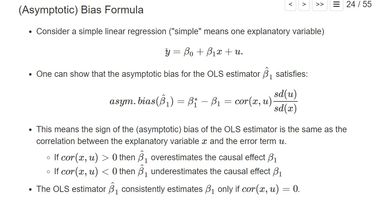There's a formula for the asymptotic bias in a simple linear regression — simple meaning we have only one explanatory variable. One can show that the asymptotic bias of the OLS estimator for beta_1 satisfies the following formula: the asymptotic bias is given by the correlation between x and the error term u, multiplied by the standard deviation of u and divided by the standard deviation of x.